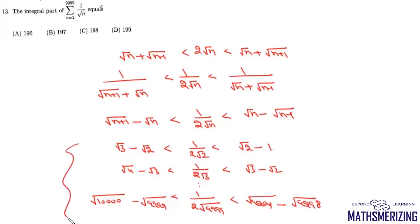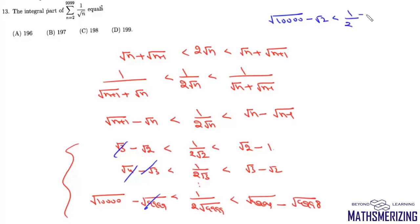Now we'll add them all. The intermediate terms like √3, √4 will cancel. On the left-hand side we get √10000 − √2, which is less than (1/2) × Σ(1/√n) for n from 2 to 9999. On the right-hand side everything cancels and we get √9999 − 1.